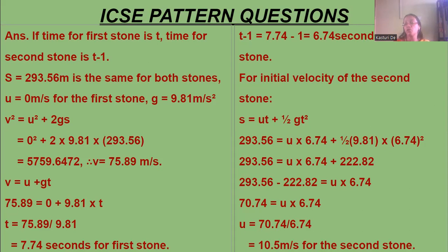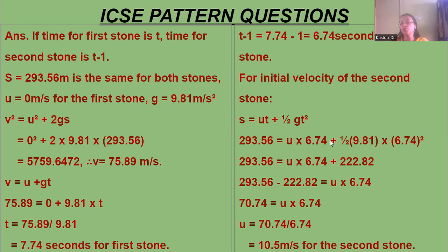For the initial velocity of the second stone, using s = ut + ½gt²: 293.56 = u × 6.74 + ½ × 9.81 × 6.74². Solving, u = 70.74 / 6.74 = approximately 10.5 meters per second is the speed at which the second stone was thrown.